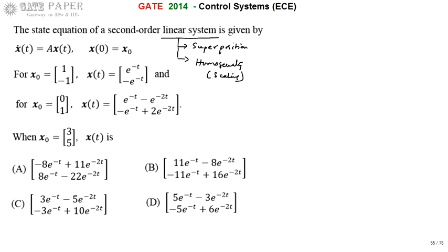The second property is homogeneity, which is simply scaling. For a linear system, if the input is scaled up or scaled down, then the response is also scaled up or scaled down by the same factor. That is what homogeneity specifies.